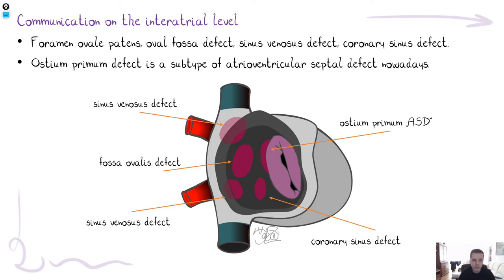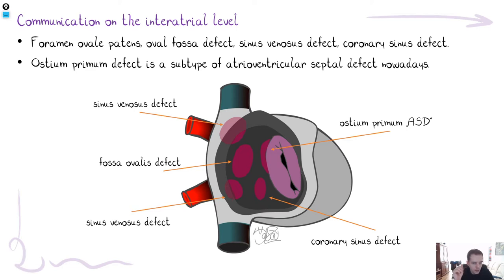Fossa ovalis defect is different — the membrane is missing or incomplete, creating a true hole between the left and right atrium. It still usually remains silent but can be clinically apparent if the hole is large enough. The key difference: in foramen ovale patens the membrane is present but unfused; in fossa ovalis defect the membrane is missing. According to some authors, foramen ovale patens is not a disease but rather a variation.